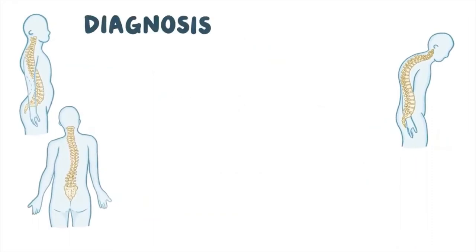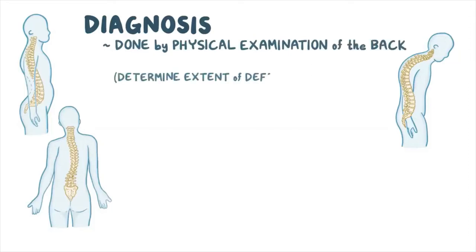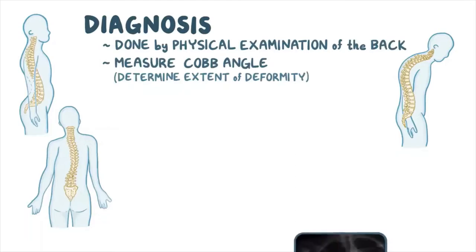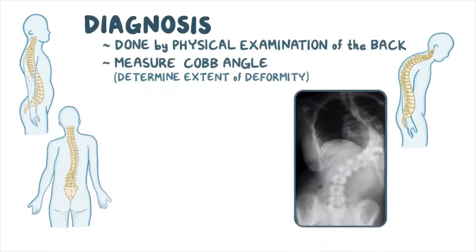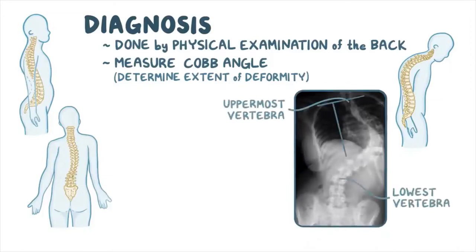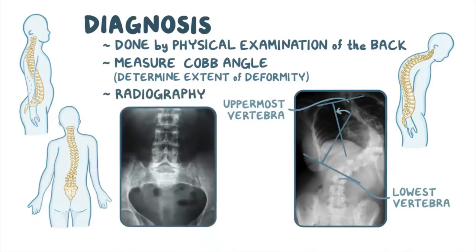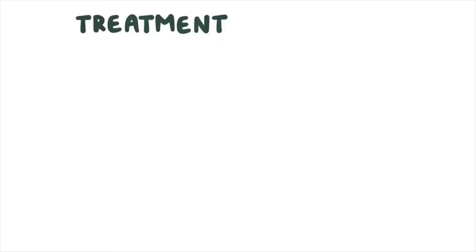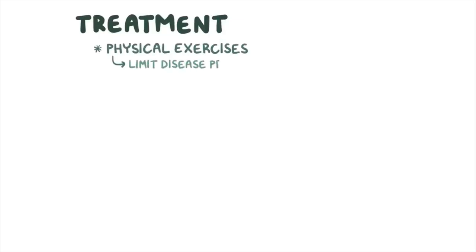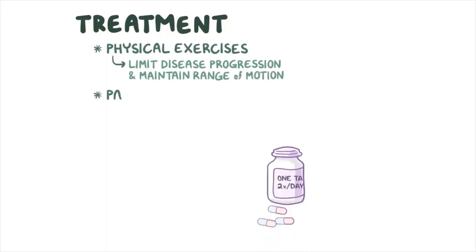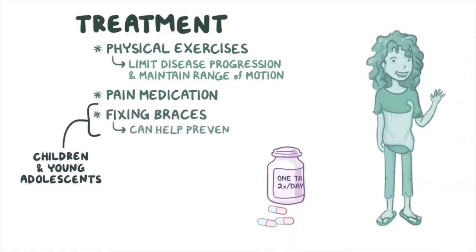Diagnosis of lordosis, kyphosis, and scoliosis is done by physical examination of the back. To determine the extent of spinal deformity, the cob angle can be measured — the angle between two lines drawn perpendicular to the upper border of the uppermost vertebra and the lower border of the lowest vertebra involved in the curvature. Radiographs can also be taken. Treatment typically includes physical exercises, pain medication when needed, braces for children and adolescents, and surgery in rare situations.